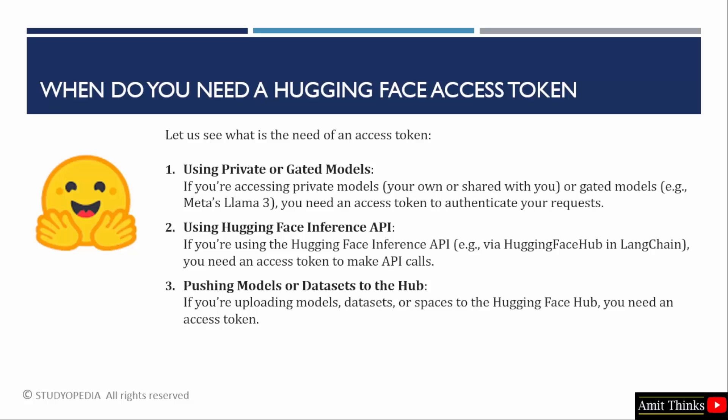You must have heard about Meta's Llama — it is a private model. To access it, you need to authenticate, which means you need to create an API key, you need a token. With that, if you are using the Hugging Face inference API, then you need an access token to make API calls.